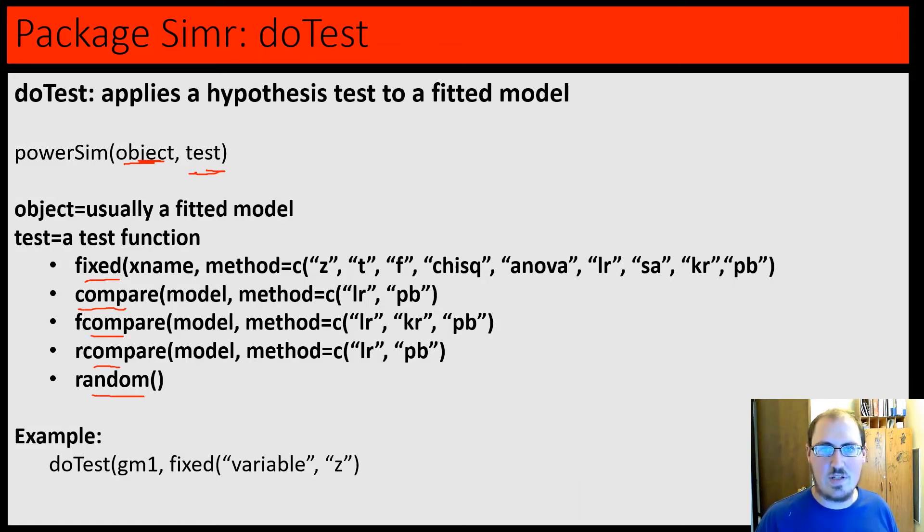So, for example, you can have a model like gm1, general model 1. You can do a fixed z-test on it, and then the variable name within here, which is whatever variable name within the model that you want to test. So, that's that.